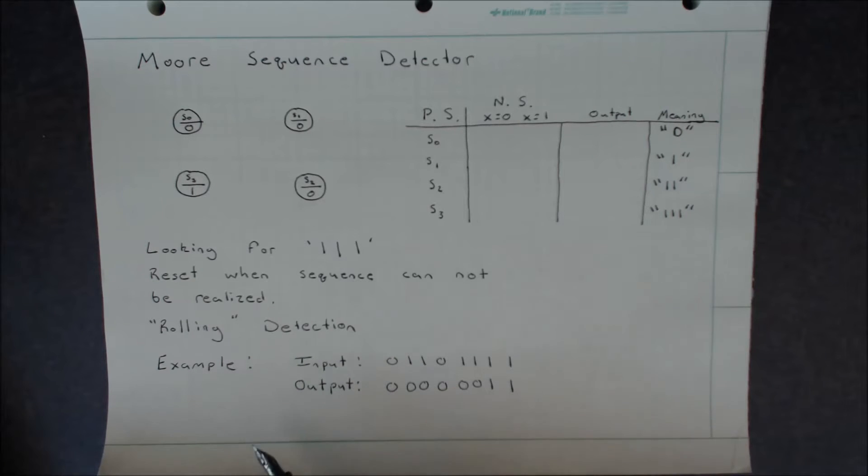To give an example of what rolling detection is, this is where if we receive the sequence 111, if we receive another 1, that will still count as receiving the sequence 111 because we're able to define a new three digits we're looking at just shifted one over.